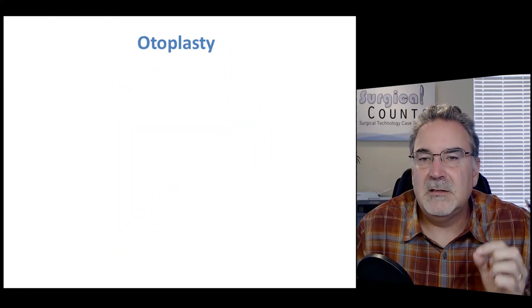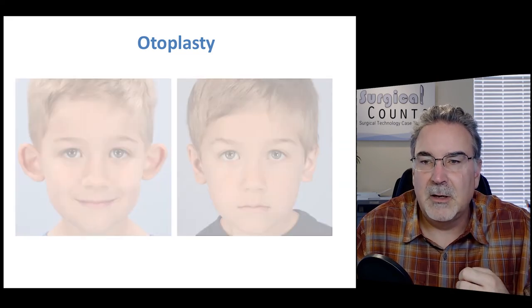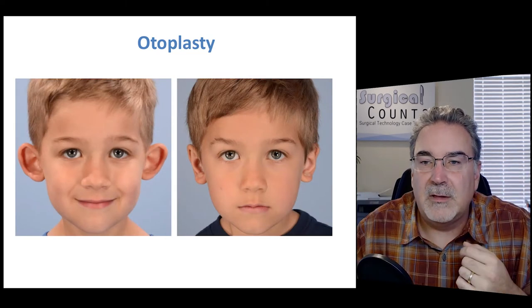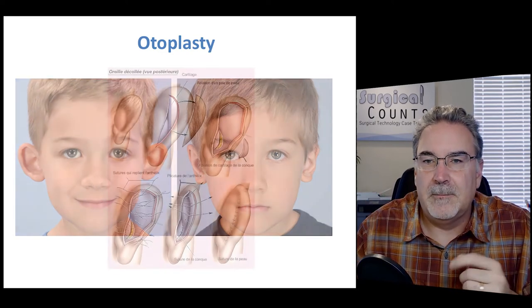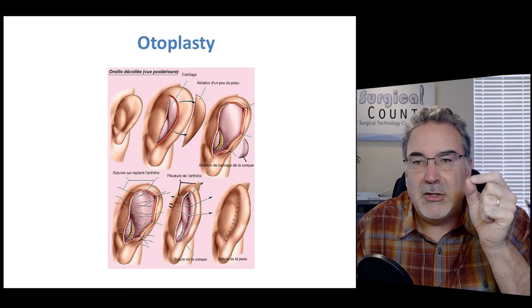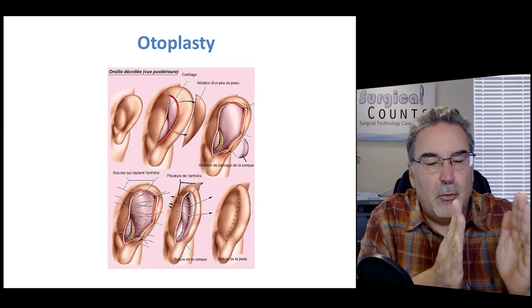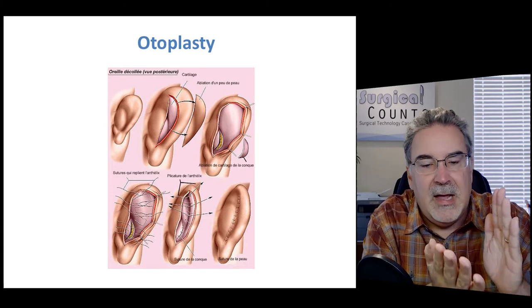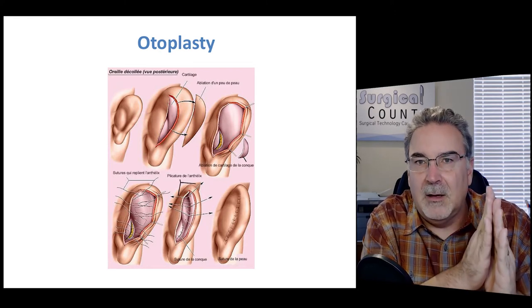Otoplasty means the revision or restructuring of the ears — oto meaning ear, plasty meaning a restructuring. Often children will come with ears that extend out more than desired, and we can change the shape and bring them back. We make a crescent incision in the skin behind the ear, then a crescent incision into the cartilage of the ear itself, bring the cartilage together with sutures, bring the skin together with sutures, and the result is that the auricle of the ear is pulled back closer to the head.